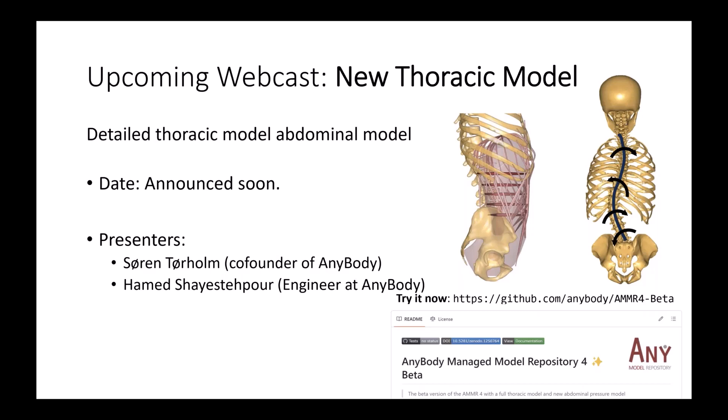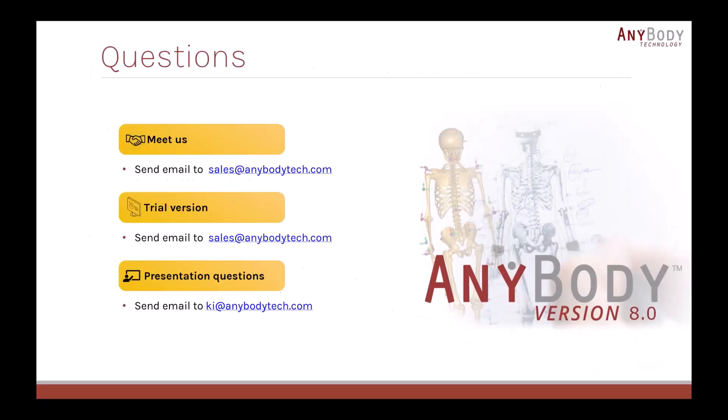I'm not going to go more into detail about this new model. There will be an upcoming webcast, we haven't decided the date yet completely. So look out for the announcement. The presenters will be Søren Tørholm, one of the co-founders of AnyBody, and then Hamed, who is one of our newest colleagues at AnyBody. As I said, you can already try this new model now. Just go to github.com/anybody/amr4beta and then you can check it out. You need AnyBody8 to use this model or a trial version. That brings us to the end of this release webcast. If you have any questions, then send an email to sales at AnyBody Tech. Kristoffer will be sure to answer them. And if you want a trial version, please send us an email.